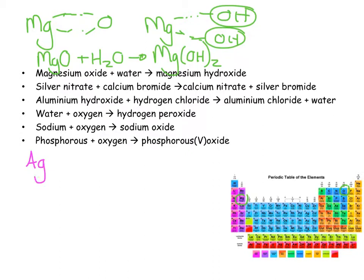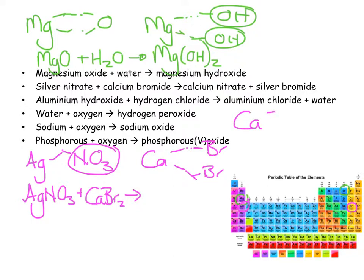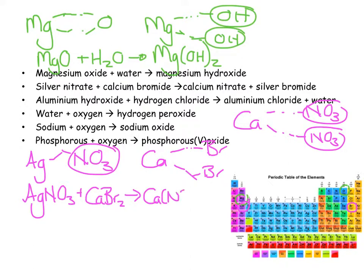Silver nitrate: silver always has valency 1, nitrate NO₃ from the sheet — so AgNO₃. Plus calcium bromide: calcium is in group 2 with 2 arms, bromine is in group 7 so 8 minus 7 gives 1 arm — CaBr₂. Products: calcium nitrate, and silver bromide — silver valency 1, bromine valency 1 — so AgBr.